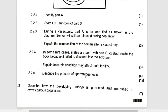Then they are saying: describe how — explain how this condition may affect fertility. In some cases, males are born with part C located inside the body, which fails to descend into the scrotum.